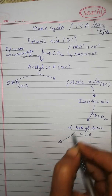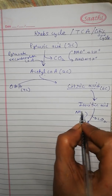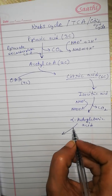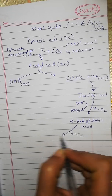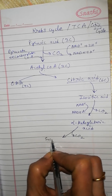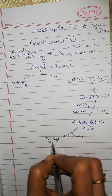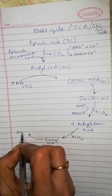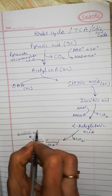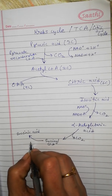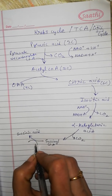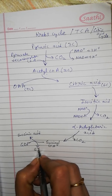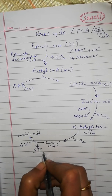In this process, NAD is reduced to NADH. This alpha-ketoglutaric acid again gets decarboxylated and forms succinyl coenzyme A. This succinyl coenzyme A then forms succinic acid. When succinic acid is formed, one GDP is phosphorylated to form GTP.